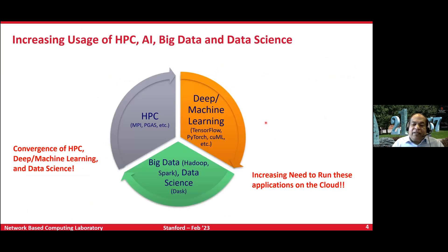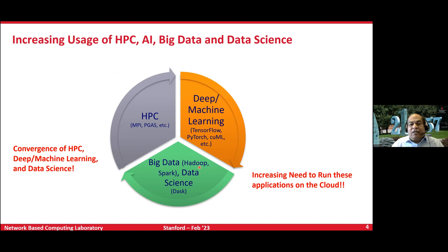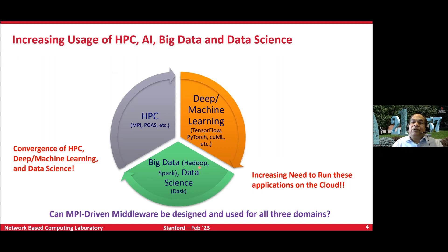If you take a look at it, we have traditional HPC applications, deep learning applications, and big data and data sciences converging with a lot of synergy. Many newer workflows use many of these things in different steps — like running a scientific application to generate data, doing deep learning on top of it to understand patterns, and then steering the computation. The question is: how many different kinds of runtimes do I need?